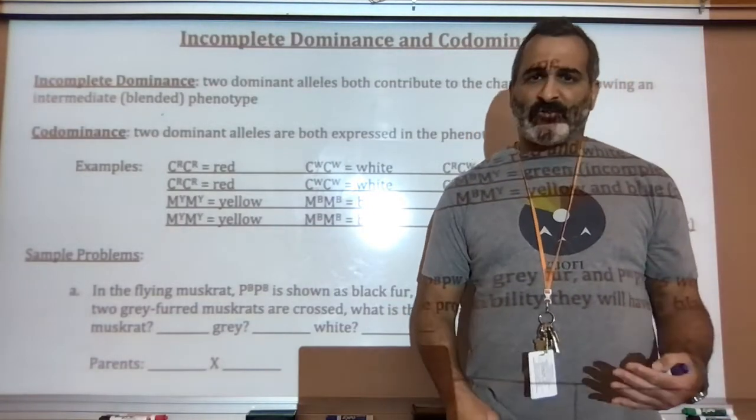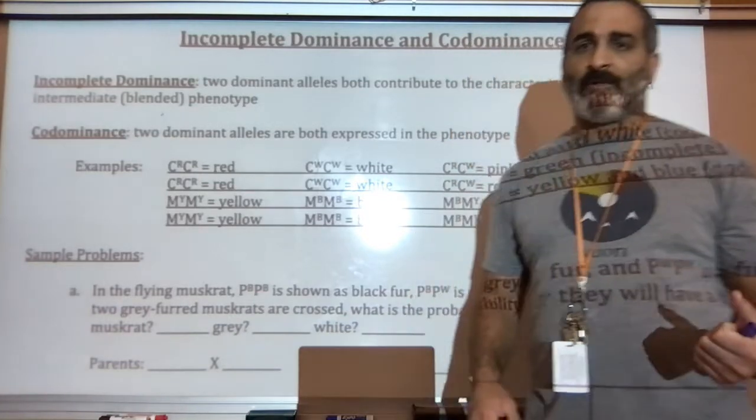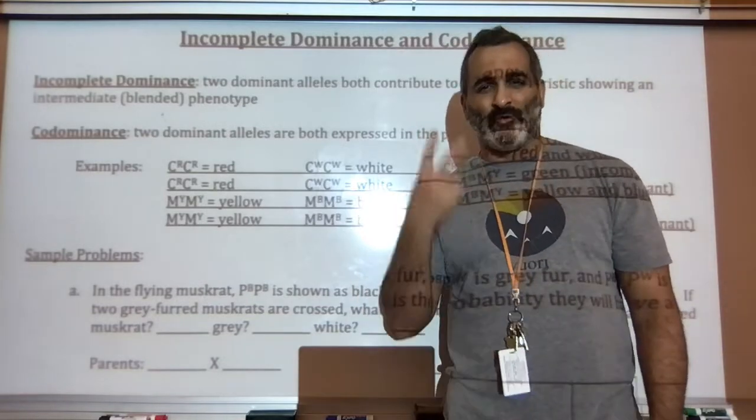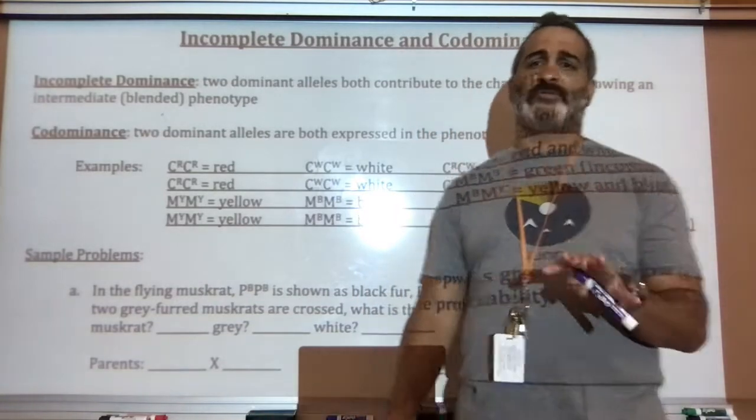These genetics crosses are a little different than the first ones that we learned. In the first ones that we learned, we noticed there was a dominant and a recessive. We had two, a dominant or a recessive. Two options is what we had.